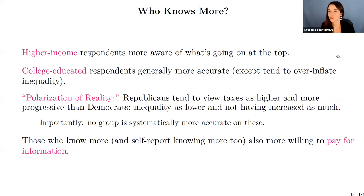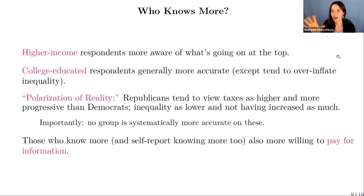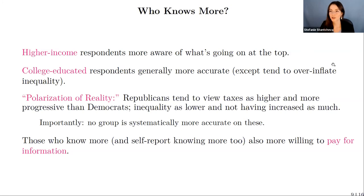There's a very interesting phenomenon I call the 'polarization of reality': even on factual questions like what the tax rate is or what income inequality looks like, Republicans and Democrats tend to have different views — things you could potentially just Google. People on the right tend to view taxes as higher and more progressive than Democrats do, and inequality as lower and not having increased as much. Importantly, no group is systematically more accurate than the other — sometimes reality is in between, sometimes all above or below both groups. Those who already know more are also willing to pay more for information, which may explain why some misperceptions persist.